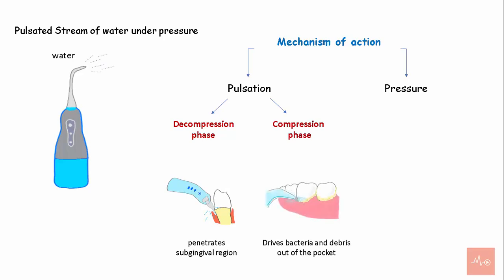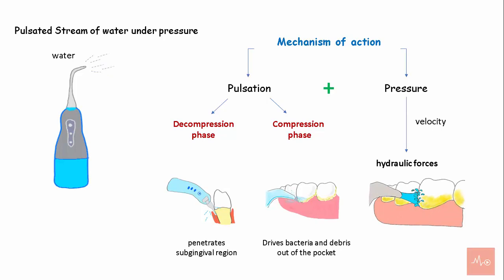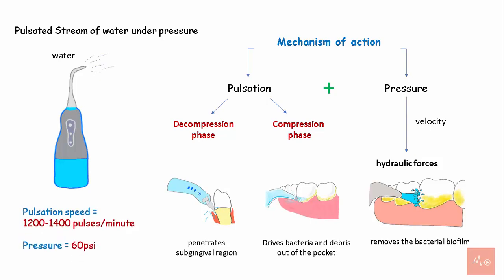Pulsation in combination with pressure and velocity of water creates shear hydraulic forces due to the movement of the fluid, removing the bacterial biofilm or dental plaque. The pulsation speed can range from 1200 to 1400 pulses per minute at a pressure of 60 PSI.